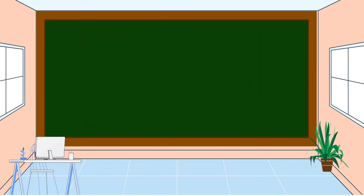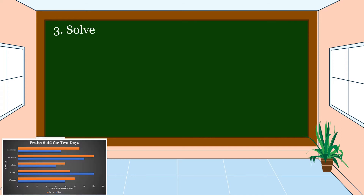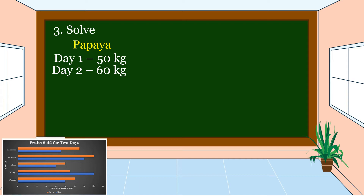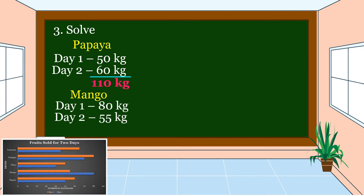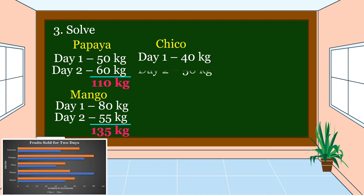We already have a plan. The next step is we're going to carry out the plan and solve the problem. For papaya: 50 kg + 60 kg = 110 kg. For mango: 80 kg + 55 kg = 135 kg. For chico: 40 kg + 50 kg = 90 kg.